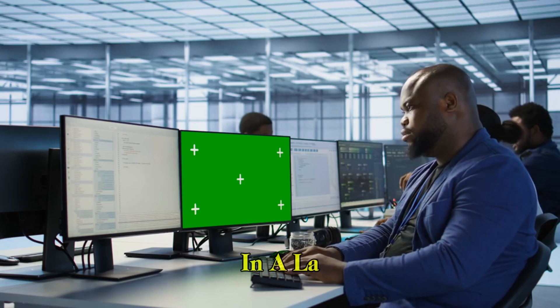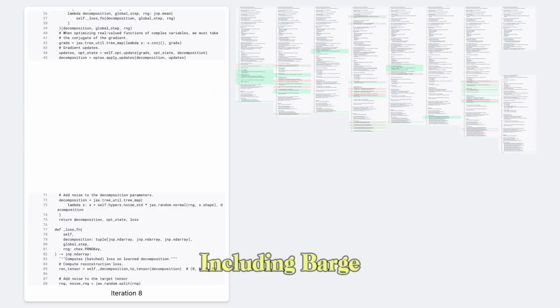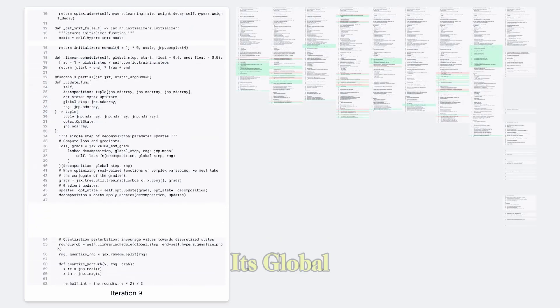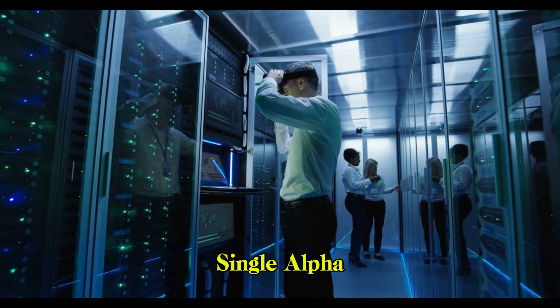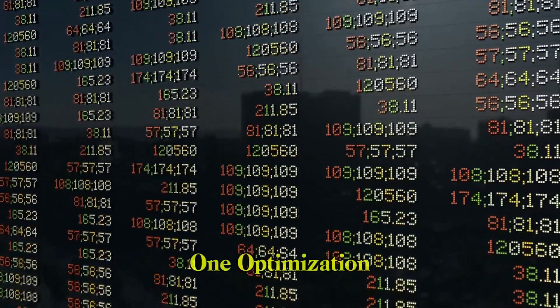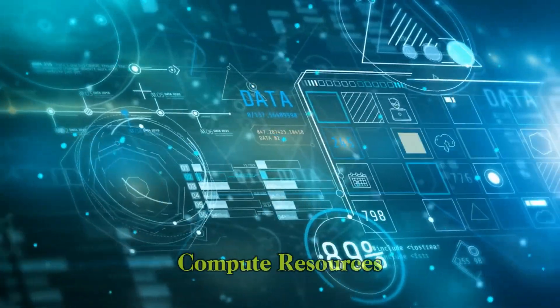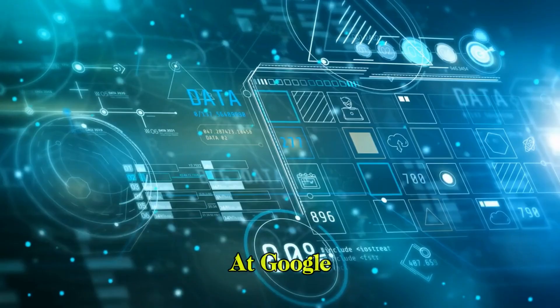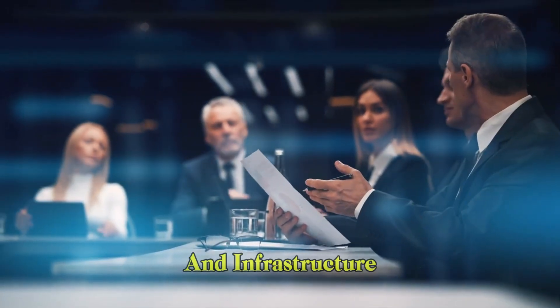This isn't some experiment in a lab—it's already being deployed live within Google's infrastructure, including Borg, the platform that manages its global data center operations. Even a single AlphaEvolve algorithm has had massive impact. One optimization alone reclaimed an average of 0.7% of global compute resources. At Google scale, that translates to millions of dollars in saved energy and infrastructure.